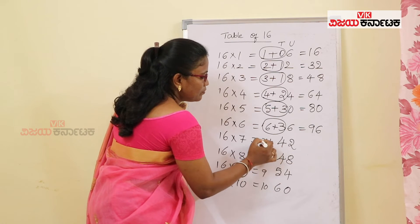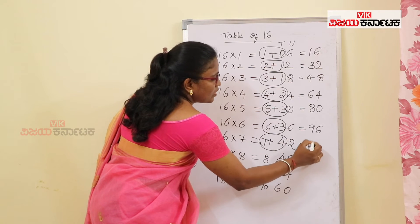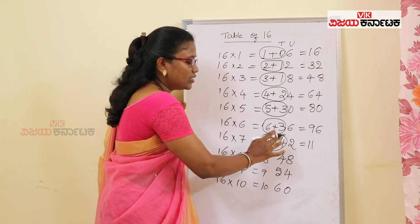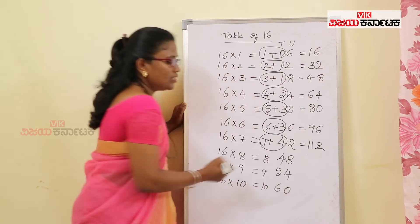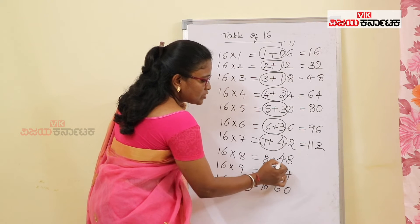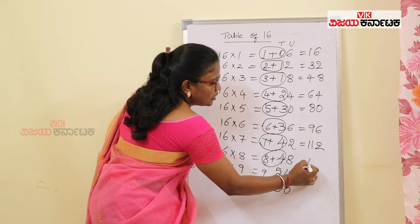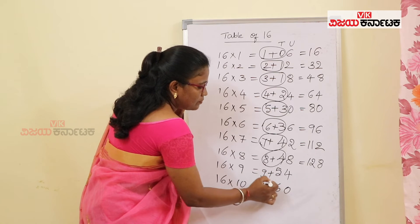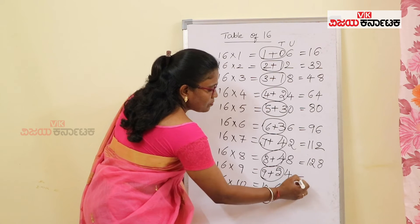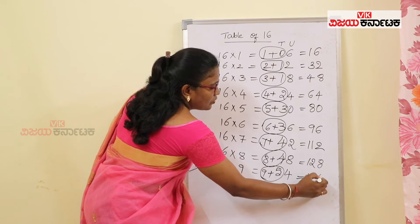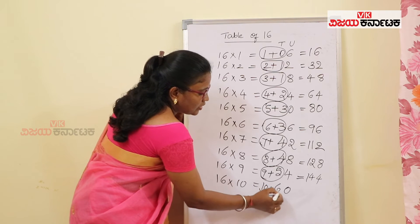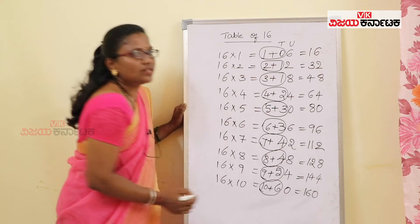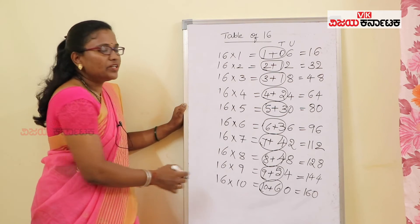We will add the 9th place. 7 plus 4 is 11 — 2 digits, no carry forwarding, so write 2. No carry forwarding, so write 2. 8 plus 4 is 12, write 8. 9 plus 5 is 14, write 4. No carry forwarding. So that is the 16th table.